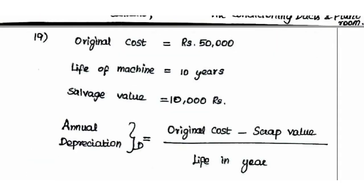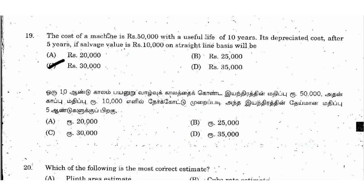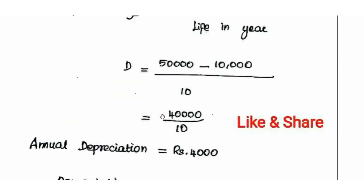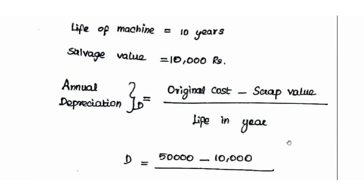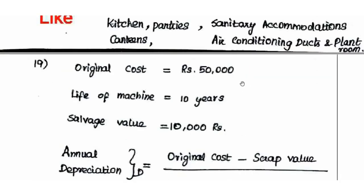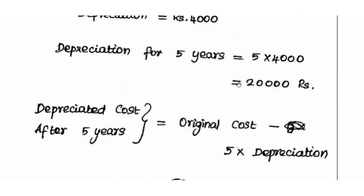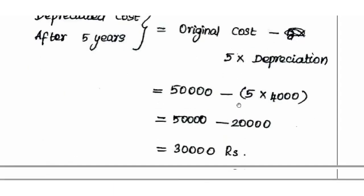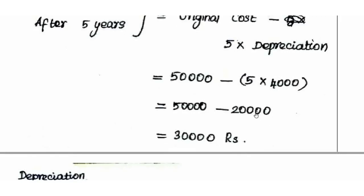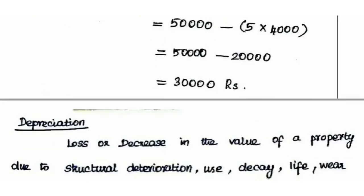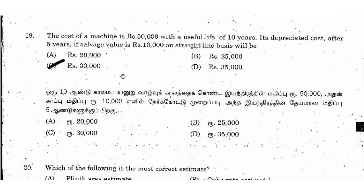Depreciation after 5 years = 5 × 4,000 = Rs. 20,000. Initial cost is Rs. 50,000. Depreciated cost after 5 years = Original Cost − (5 × Annual Depreciation) = 50,000 − 20,000 = Rs. 30,000. The right answer is option C: Rs. 30,000.